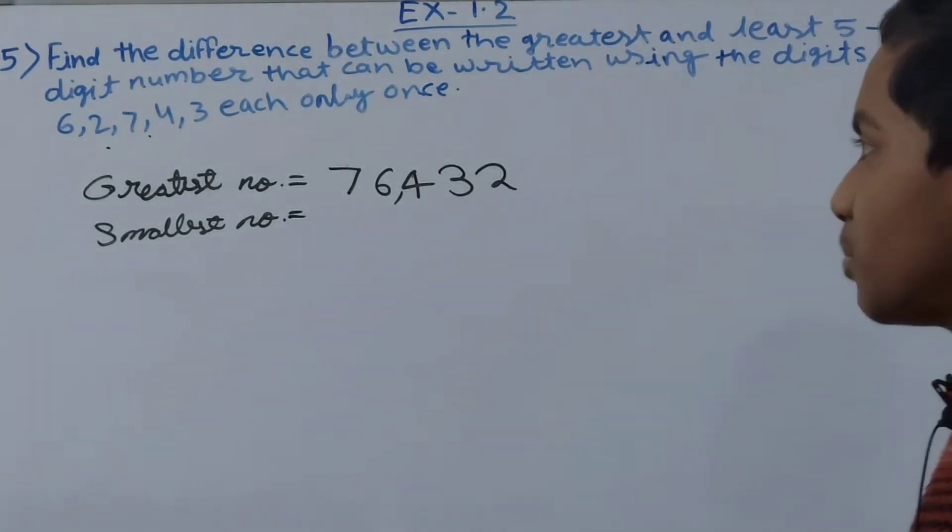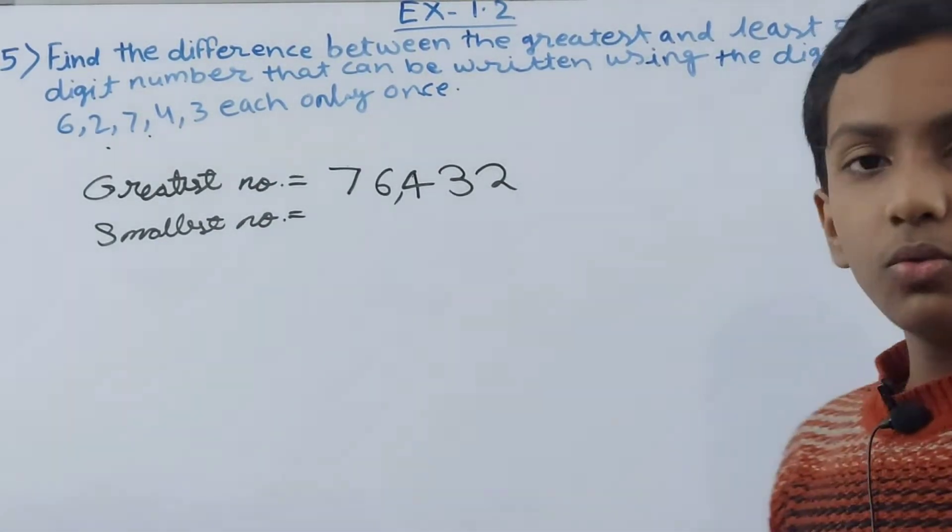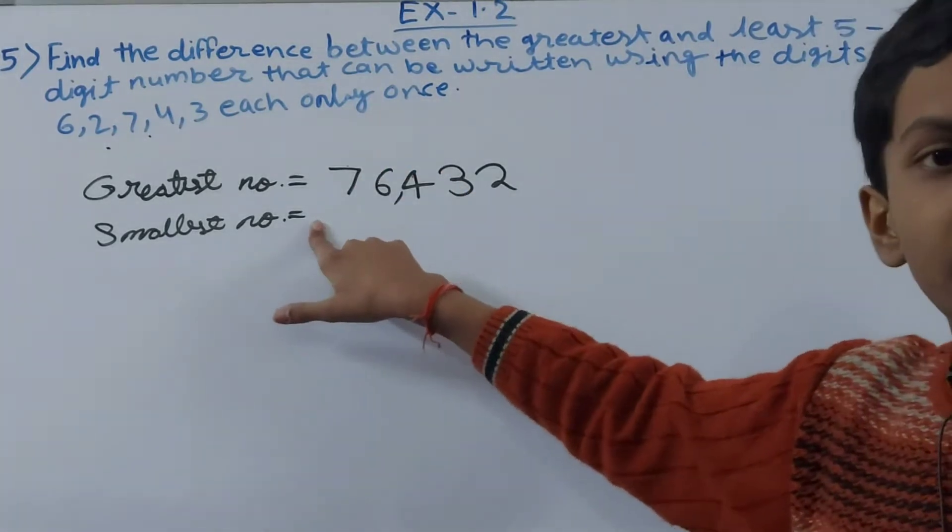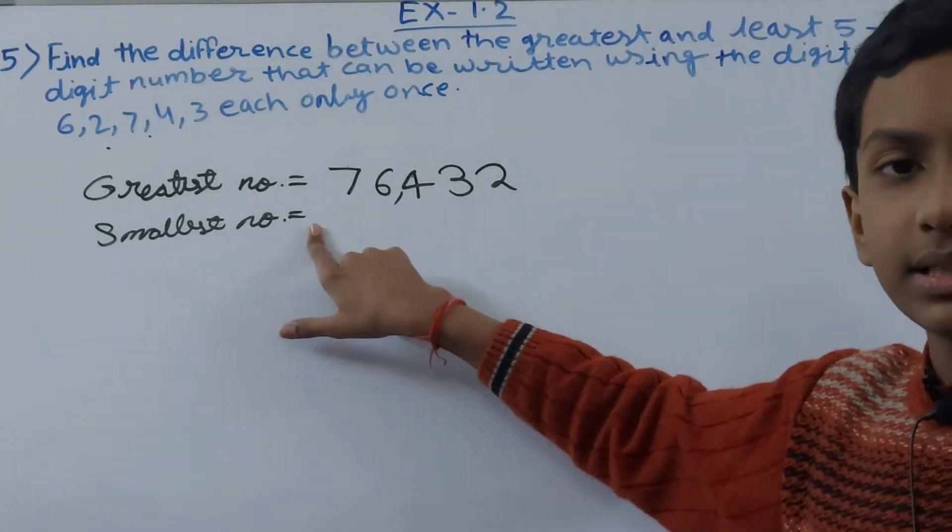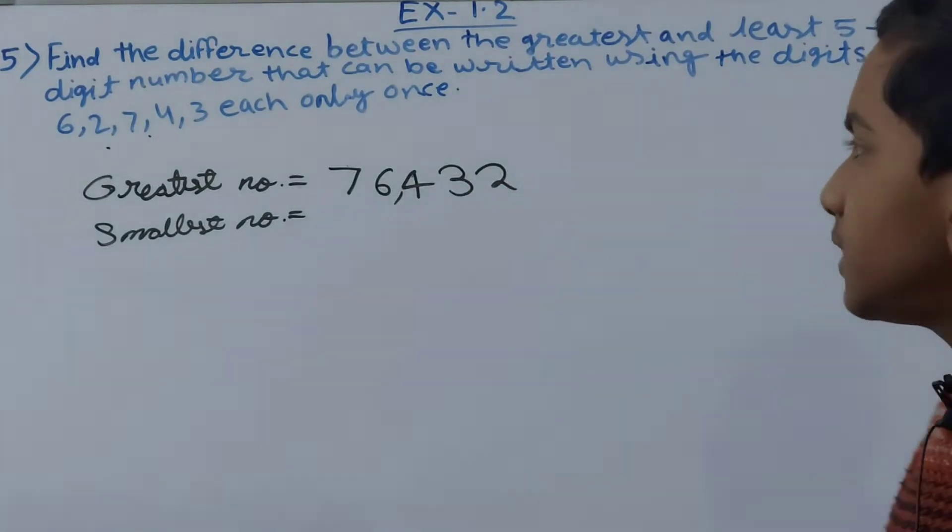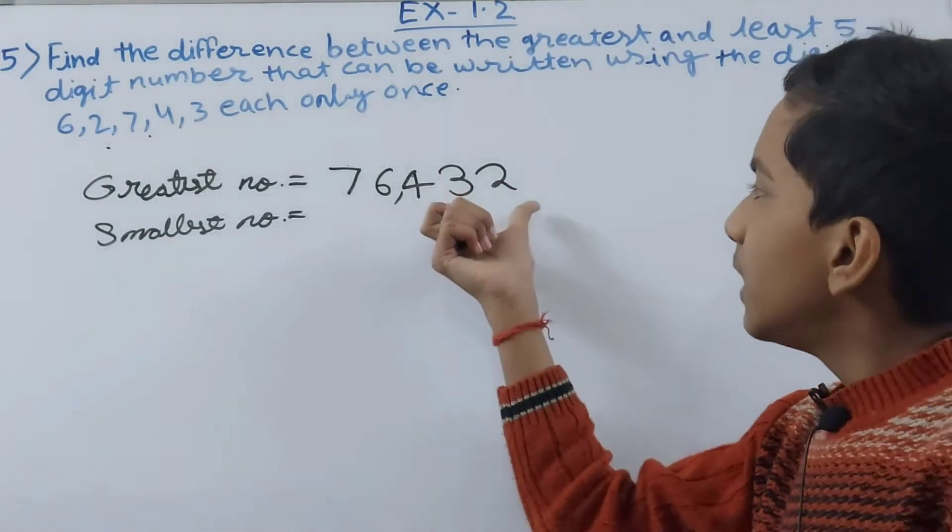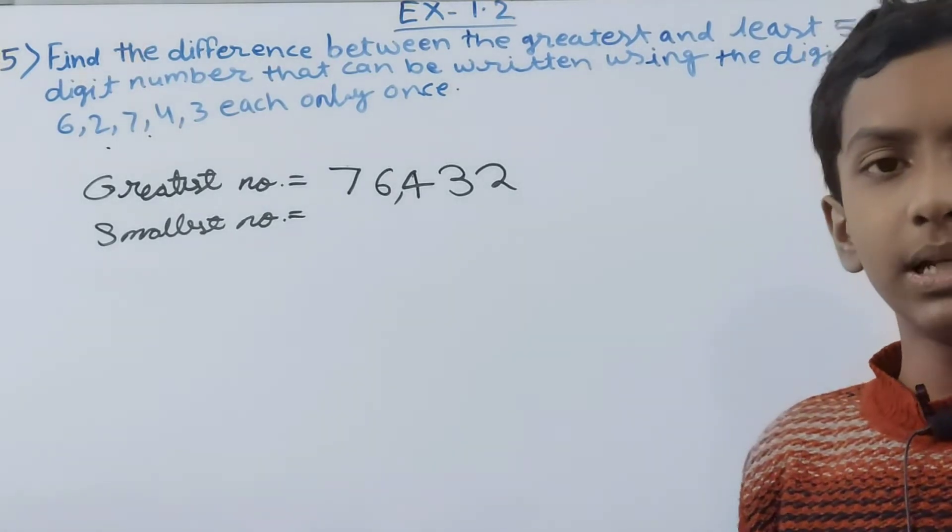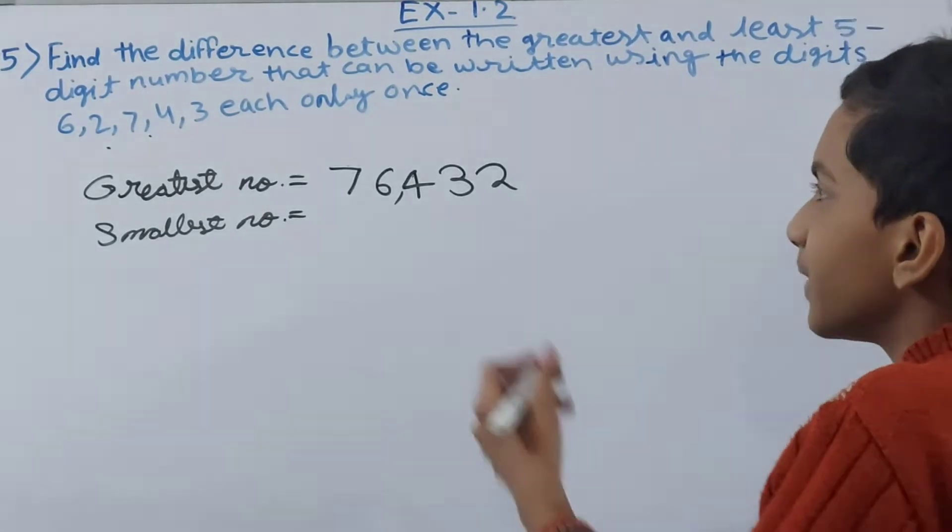Now for the smallest number we do one thing - we write the digits in ascending order from the smallest to the greatest. Or you can just reverse the greatest digit to get the smallest number.